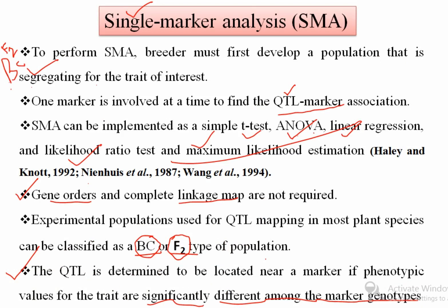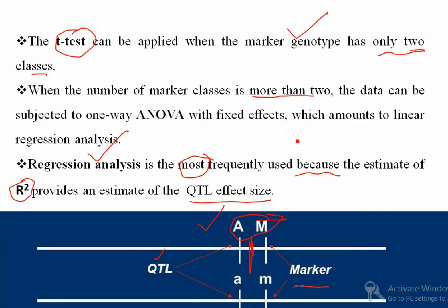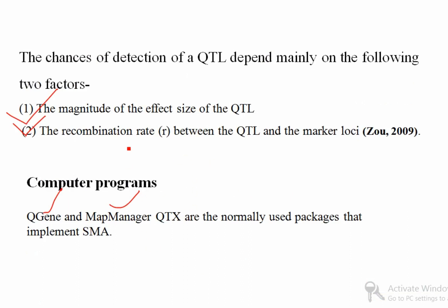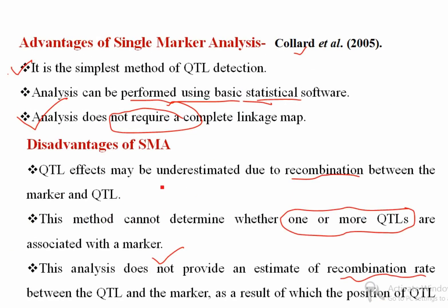To summarize SMA: you need t-test or linear regression; a complete linkage map is not required; you need segregating populations; t-test is applied when marker genotype has two classes; ANOVA for more than two classes; regression analysis is most important for estimating R-squared. Population structure and size are both important. To overcome the limitations of SMA, there is another technique called simple interval mapping, which uses flanking markers. I will discuss simple interval mapping in another video. Thank you for watching.